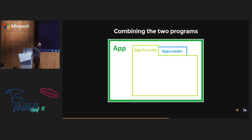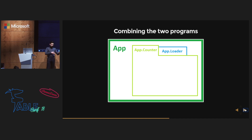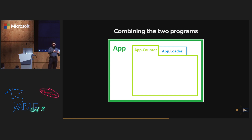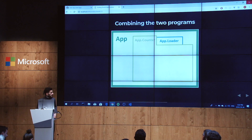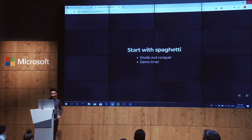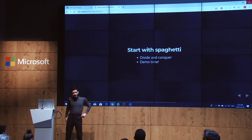I showed these two examples because I want to combine them in a bigger application. I have two different programs, because every component has its own view, update, and init. We want to combine them — for example, in a web application you can have multiple pages and want to develop each page as its own thing. You don't want to mix messages and you don't want to mix state. So we will start with spaghetti and see how that goes.